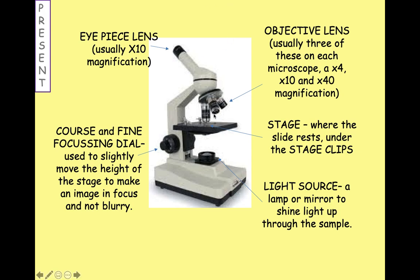Whatever you're trying to look at goes on here on the flat black layer called the stage. Just like in performing arts, the stage is where all the action happens — and that's the same with the microscope. There are stage clips to hold what you're looking at in place so it doesn't get knocked. Your microscope slide — your glass slide — would sit on here. Underneath it there is a small hole so that the light source can shine light up through your sample, through the objective lens, through the eyepiece lens, and into your eye.